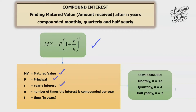N is the number of times the interest is compounded per year. So if it's compounded monthly, N is 12, because 1 year we have 12 months. Quarterly — quarter means 1 over 4, therefore N is 4. And half yearly — half is 1 over 2, therefore N equals 2. And T equals time in years.